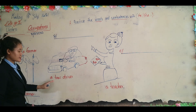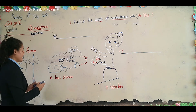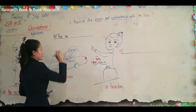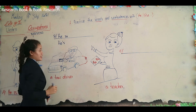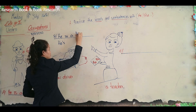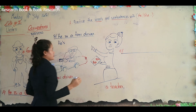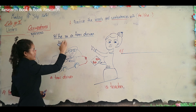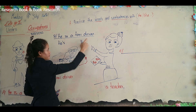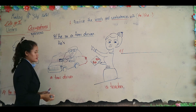The next picture is a taxi driver. Is it 'he' or 'she'? Excellent job, it's 'he'. So: he is a taxi driver. Repeat after me: he is a taxi driver. Good.